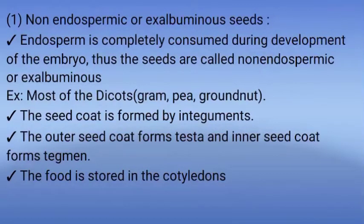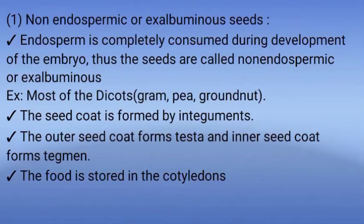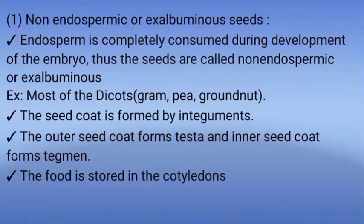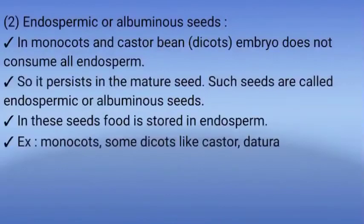Non-endospermic seeds are found in most dicotyledonous plants like gram, pea, and groundnut. The seed coat is formed by integuments — the outer seed coat is called testa and the inner is called tegmen. In dicotyledonous plants, the consumed endosperm food is stored in the cotyledons.